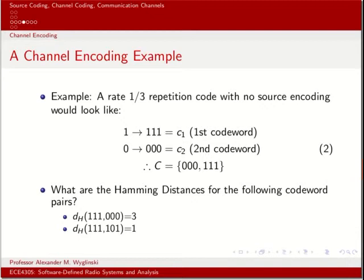The codebook for a rate one-third repetition code is simple: if we get a one, we have three ones at the output; if we have a zero, we get three zeros. So the codebook C equals {000, 111}. The Hamming distance between these two codewords is three — they're totally different. Now, if instead we had one represented by 1,1,1 and zero represented by 1,0,1, the Hamming distance would be one — and that's pretty bad.